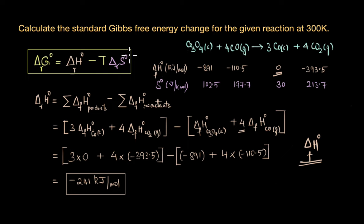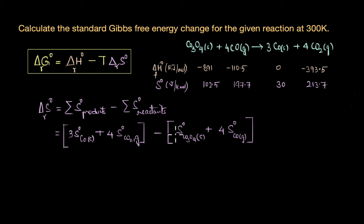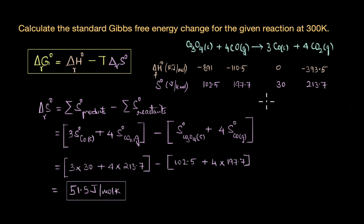Now we calculate ΔS°r, the standard entropy change for the reaction, using: sum of standard entropies of products minus sum of standard entropies of reactants. Again, remember to include the stoichiometric coefficients of reactants and products. Substituting the given values gives a final answer of 51.5 J/mol·K.